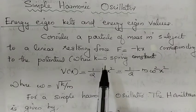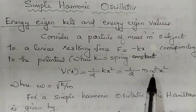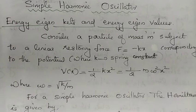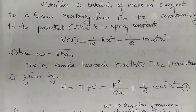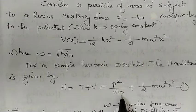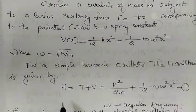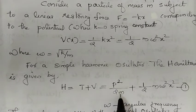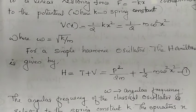We consider a classical harmonic oscillator. The potential energy of the system is given by V of x equal to half m omega squared x squared, where omega is equal to root of k by m. Then for a simple harmonic oscillator the Hamiltonian is the sum of kinetic and potential energies: H is equal to p squared divided by 2m plus half m omega squared x squared, where omega is the angular frequency.